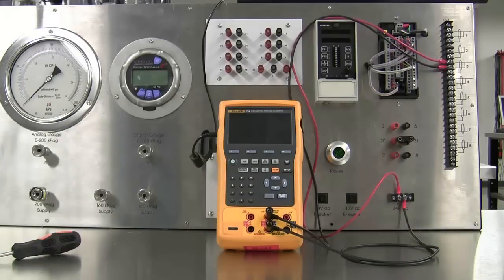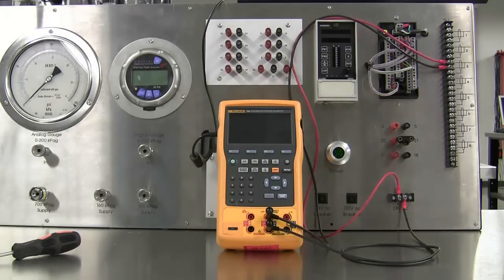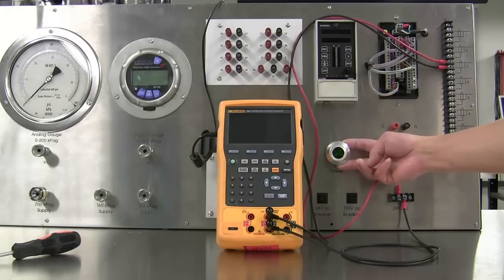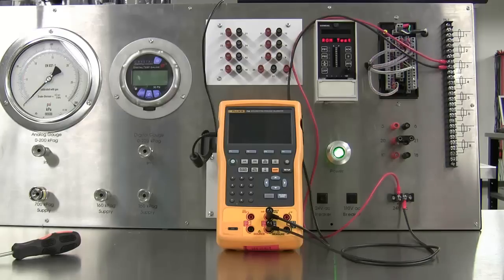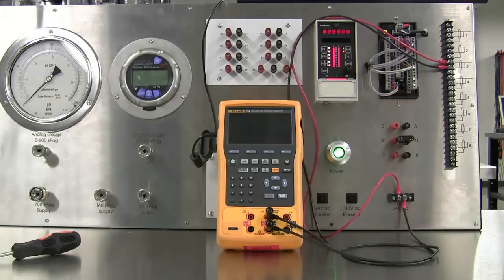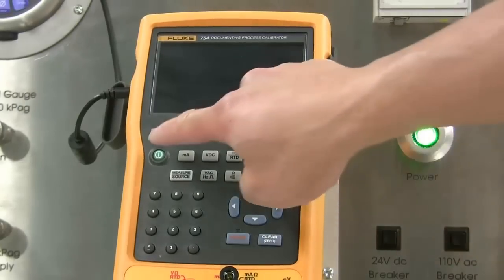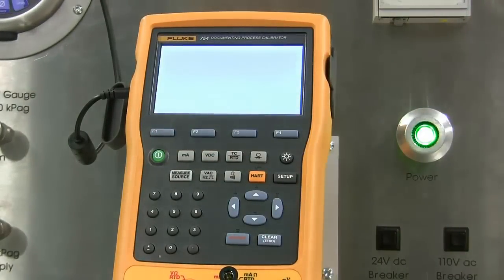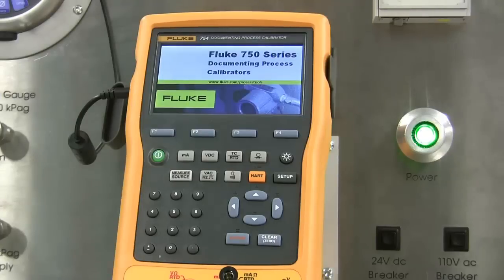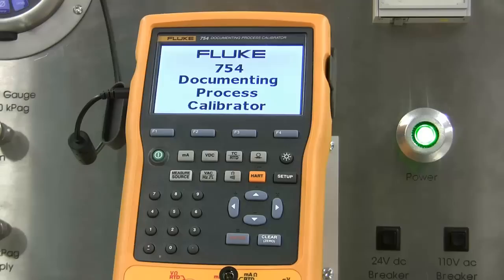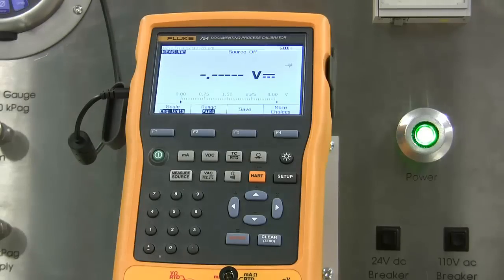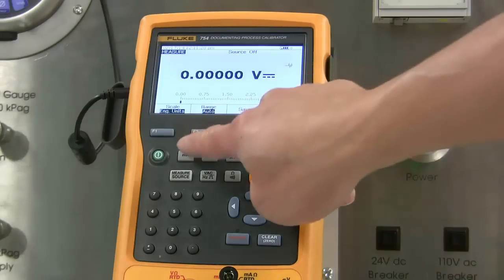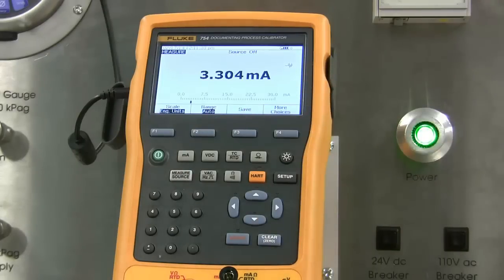You can go ahead and power on the transmitter. Turn on the Fluke and set the Fluke to measure milliamps. If you wired up the transmitter properly, you should see about 4 milliamps showing on the Fluke.